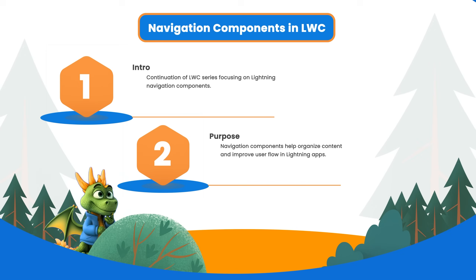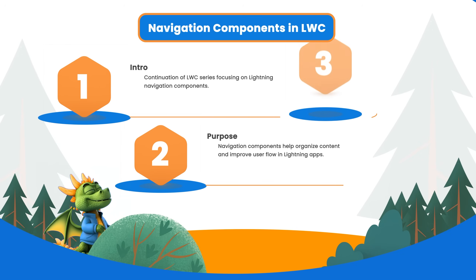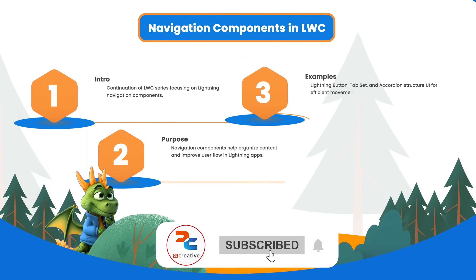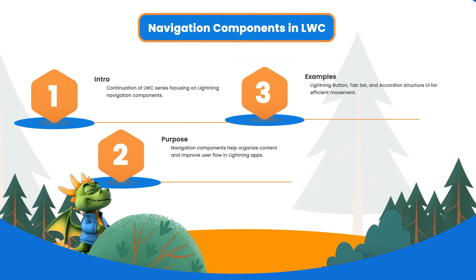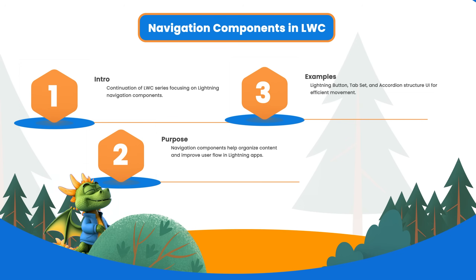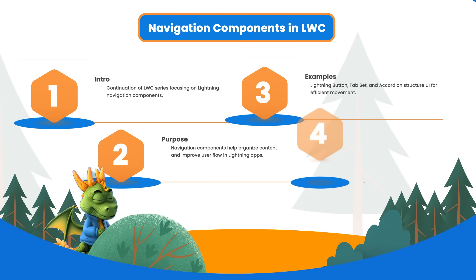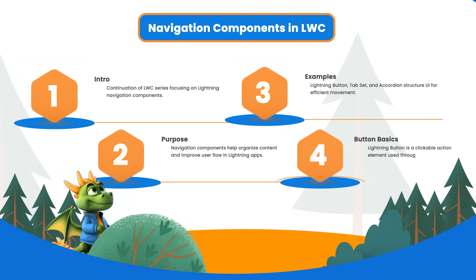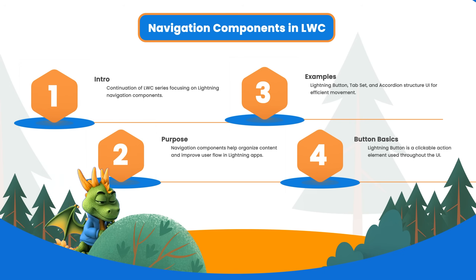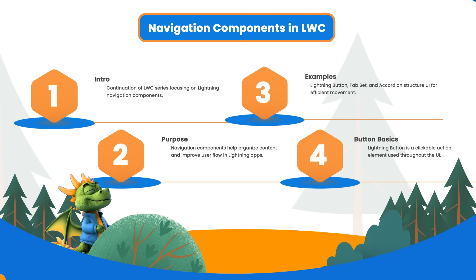In Salesforce lightning, there are components available for organizing content and helping users move through the app efficiently. The components include lightning button, which is a clickable element to start an action; lightning tab set, which organizes content into switchable sections on one page; and lightning accordion, which hides and shows content in expandable and collapsible panels to save space. In LWC, the lightning button based component provides several types of buttons: normal buttons, button groups, button icons, and button menu.